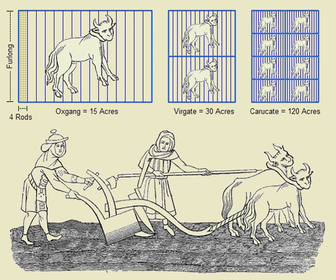Other countries where the acre is used include Dominica, the Falkland Islands, Grenada, Ghana, Guam, the Northern Mariana Islands, Jamaica, Montserrat, Samoa, Saint Lucia, Saint Helena, Saint Kitts and Nevis, Saint Vincent and the Grenadines, Turks and Caicos, the United Kingdom, the United States, and the U.S. Virgin Islands.